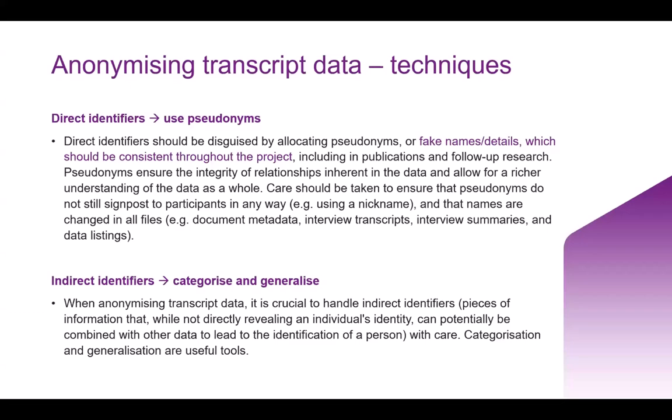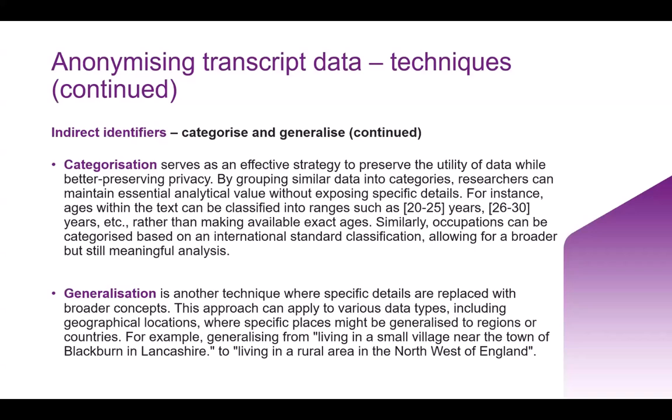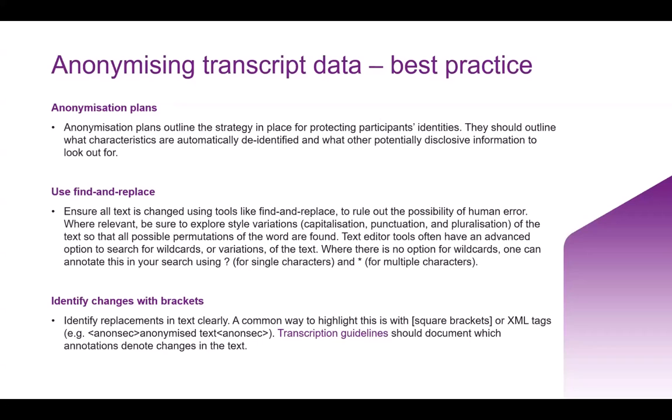Using the same generic labels reduces differentiation between speakers in a collection and limits analysis opportunities. Indirect identifiers can use strategies of categorize and generalize information — where an indirect identifier has been identified, you can simply replace the text with something less disclosive. Categorization is where you create new categories that reduce the precision of the text. Generalization is less about creating categories and more about re-describing the text in broader terms. We also see generalization on a grander scale where transcripts are too disclosive and interview summaries and field notes have been provided instead.